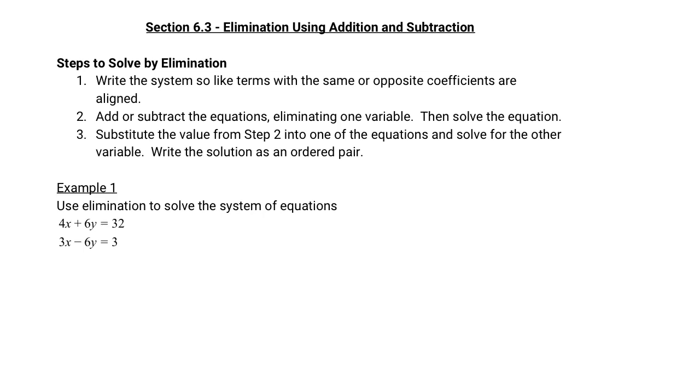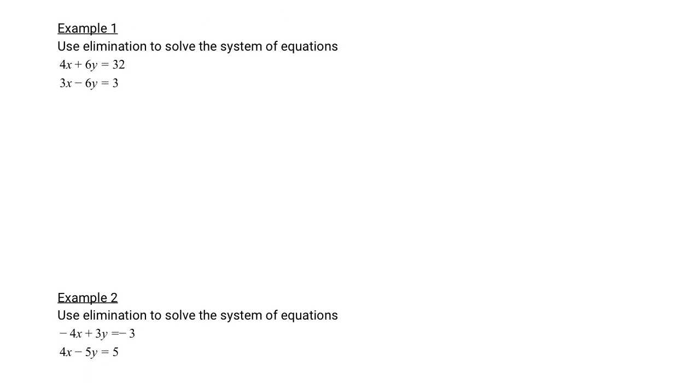Let's forget for a minute about these words and work through this first example together. A system of equations is any two or more equations that describe the same scenario. So we've got 4x plus 6y equals 32, and 3x minus 6y equals 3. I've lined them up where all the x terms are in a column, all the y terms are in a column, and all the constants are in a column. It doesn't matter what order they're in as long as everything is lined up one above the other.